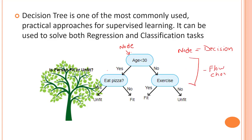From this flowchart we will be able to predict if a person is fit or unfit. First we check if the age is greater than or less than 30. If age is less than 30 we check if he eats pizza or not — if yes, he is unfit; else he is fit. If age is greater than 30 we check if the person is exercising — if yes, he is fit; else he is unfit.